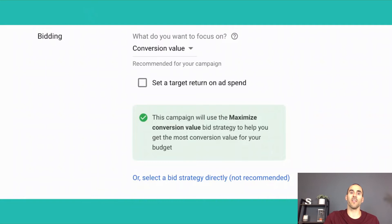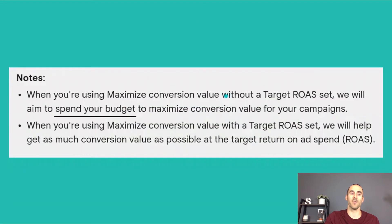The next thing to discuss is the option to set a target return on ad spend. According to Google: when using maximize conversion value without a target ROAS, they aim to spend your budget to maximize conversion value. When using it with a target ROAS, they help get as much conversion value as possible at that target return on ad spend.